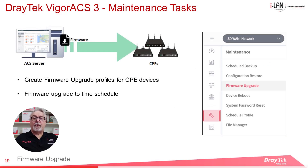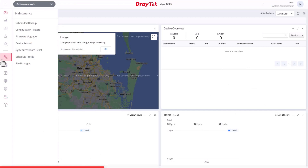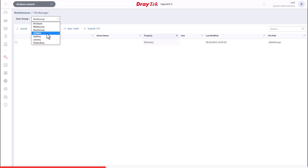In our previous webinar we looked at Firmware Upgrade when used with Global Provisioning. Within the Maintenance menu you can select a single device to upgrade the firmware, and you can carry out the upgrade at a suitable time by using the Scheduling function. Before upgrading firmware on the managed devices, we need to first upload the firmware files to the ACS3 server. To do this, go to the File Manager within the Maintenance menu. You'll need to have the required user group selected — let's use our SD-WAN user group for this example.